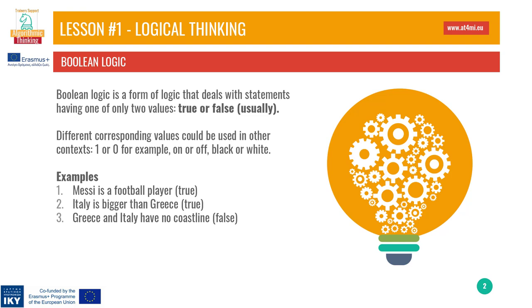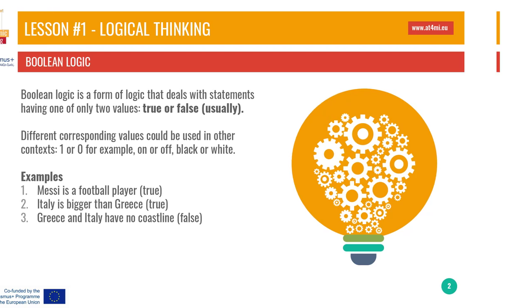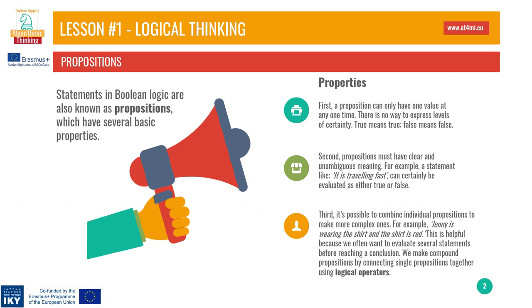Here are some true or false arguments: 1. Messi is a football player — it is true. 2. Italy is bigger than Greece — it is true. 3. Greece and Italy have no coastline — it is false. Propositions. Statements in Boolean logic are also known as propositions, which have several basic properties. First, a proposition can only have one value at any one time. In other words, a single proposition can't be both true and false simultaneously. There is no way to express levels of certainty. True means true, false means false.